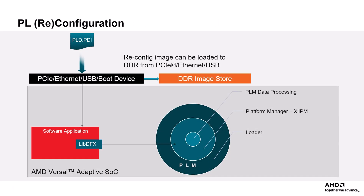This slide shows how PL reconfiguration happens using the PL PDI. The assumption is that the software is up and running and the user has the PL PDI, which can be fetched by the software application running on the hardware. The software loads the PL PDI using any high-speed interface such as PCIe, Ethernet, USB, or another boot device, and then requests PLM services like LibDFX to create and store a DDR image into DDR memory. This allows the PLM to reconfigure the PL PDI whenever the software application requests it at runtime, and also prevents the runtime software and PLM from accessing the boot device at the same time.